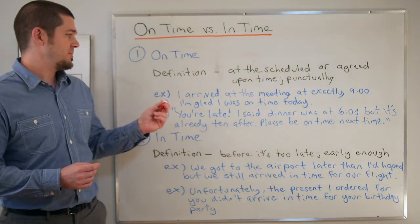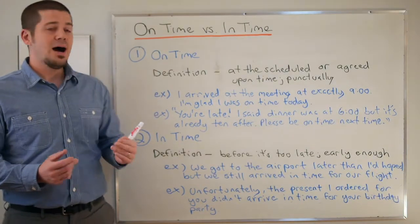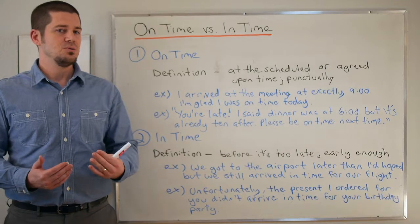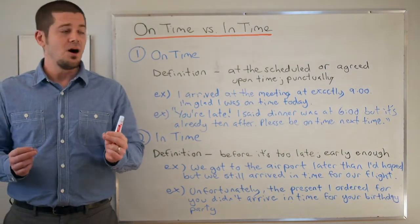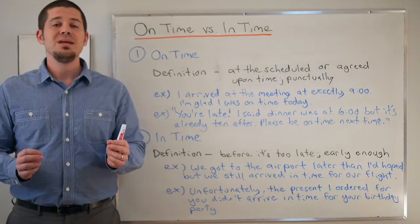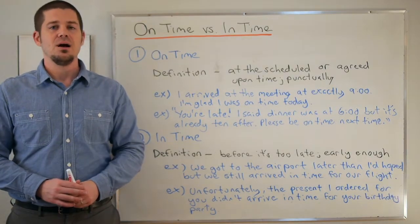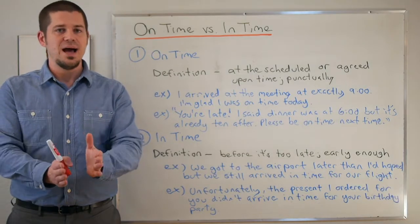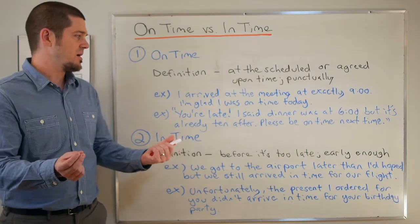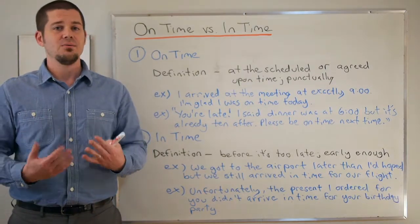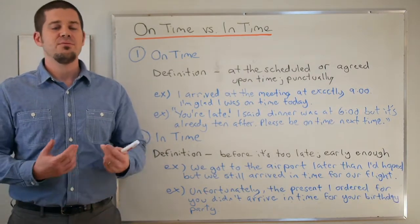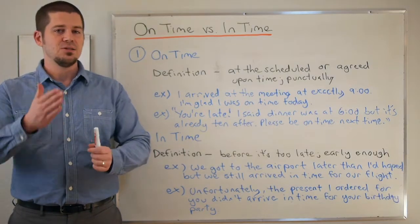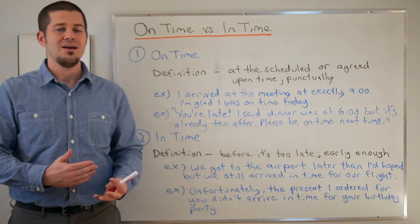Here's our first example: 'I arrived at the meeting at exactly nine o'clock. I'm glad I was on time today.' I think most people know how to use 'on time' this way. I arrived at exactly nine o'clock — the meeting started at exactly nine o'clock. If I arrived five minutes early I was still on time. So no matter how early I arrive, as long as I arrive at nine o'clock or before, I am on time.